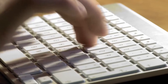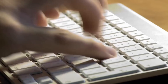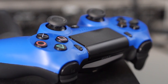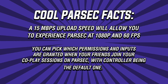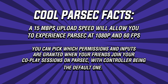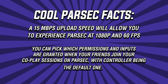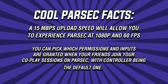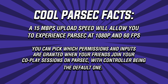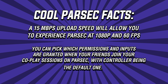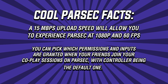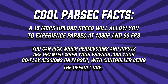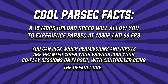Now that you have learned the basics, here are a few cool facts about Parsec you should know. A 15 megabit per second upload speed will allow you to experience Parsec at 1080p and 60 frames per second. You can pick which permissions and inputs are granted when your friends join your CoPlay sessions on Parsec, with controller being the default one.